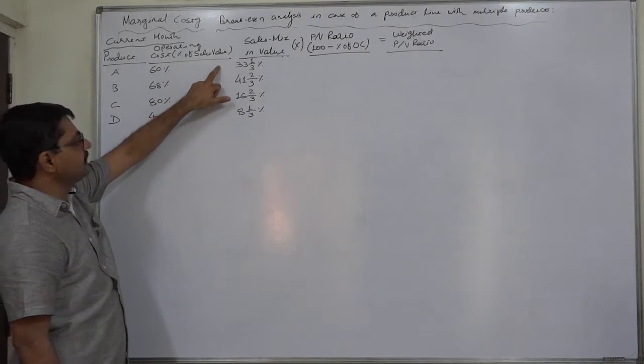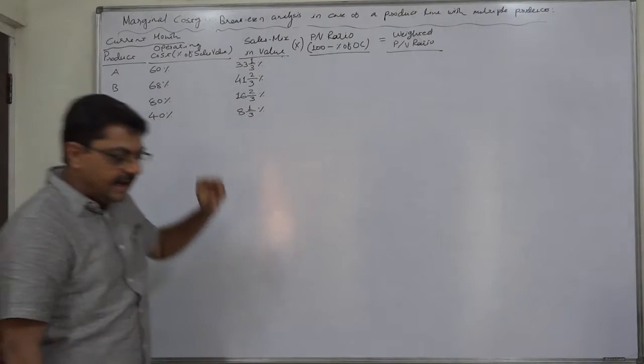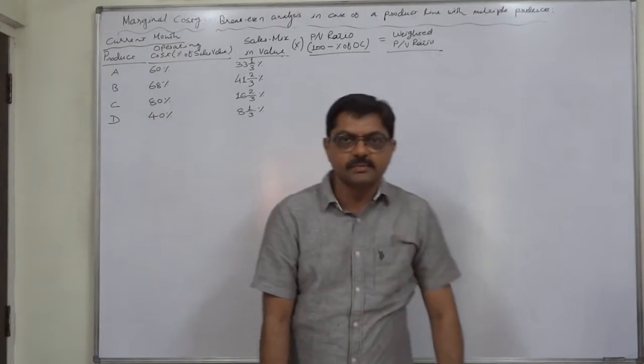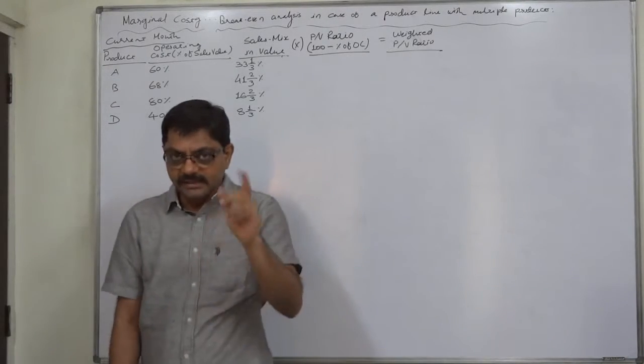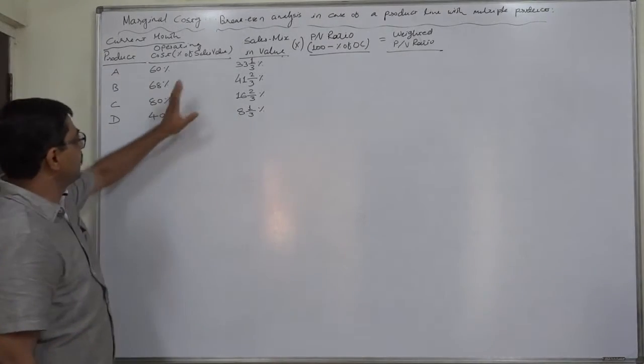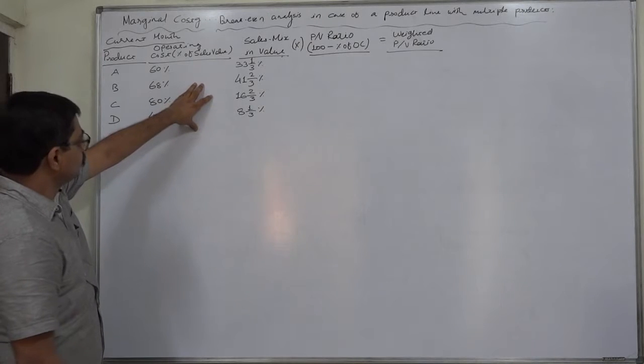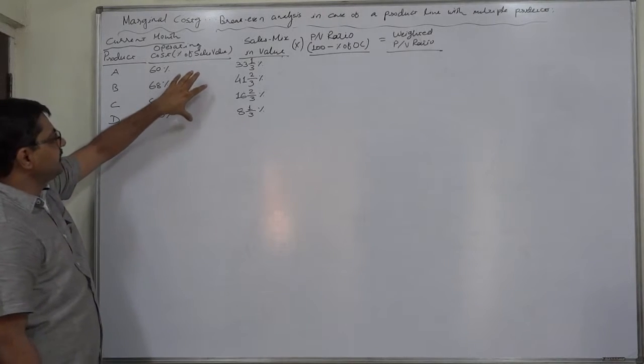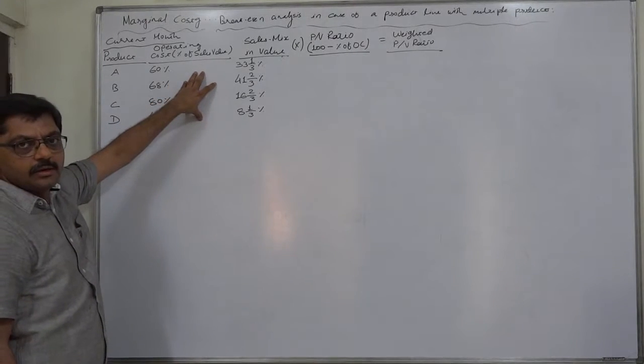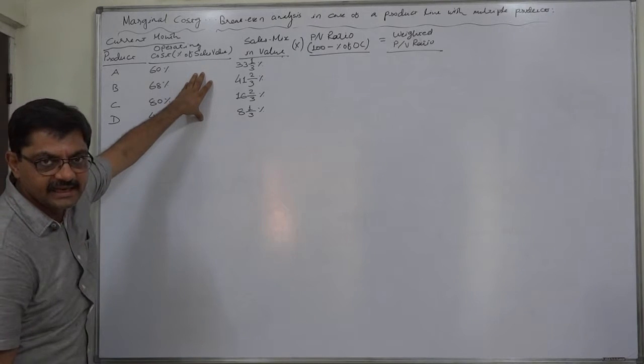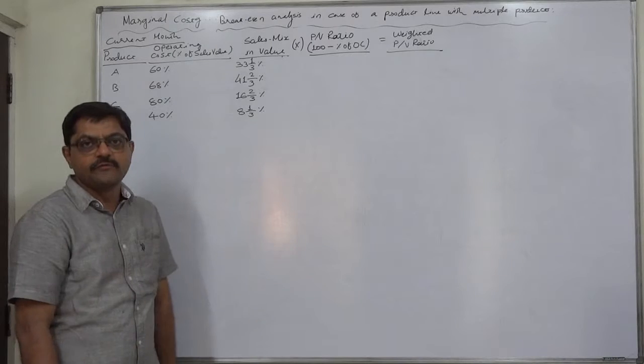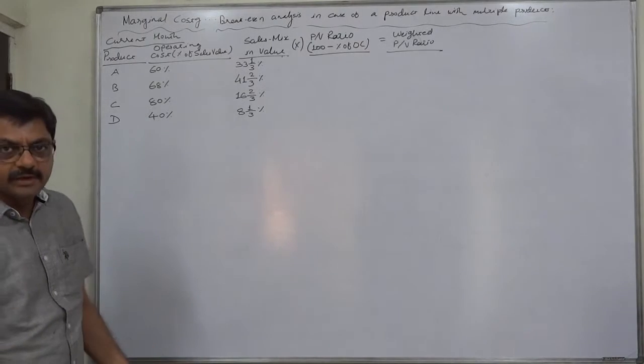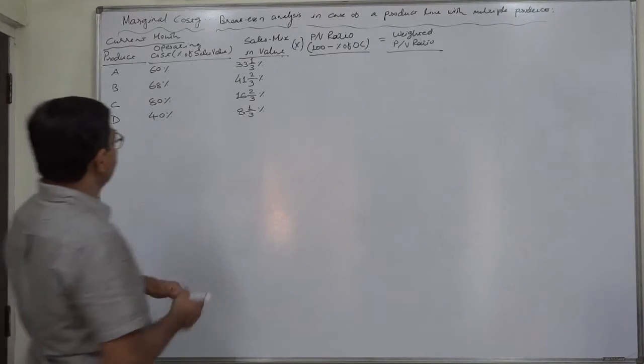But see, the operating cost has been given as percentage of sales value. Any cost expressed as percentage of sales value is always a variable cost. That means in this case the operating costs are variable. So if we subtract the percentage of operating cost from sales, taking 100%, the remaining will be the percentage of contribution, that means PV ratio.